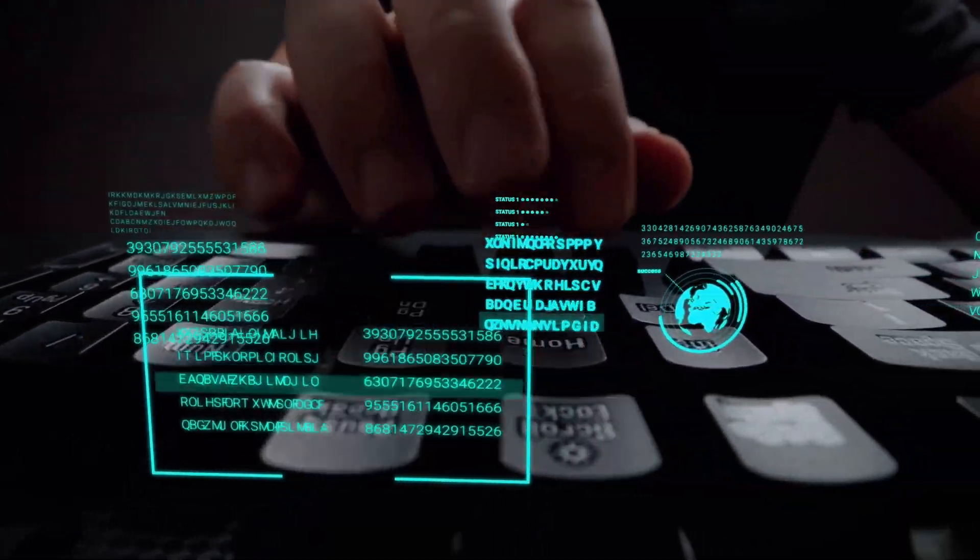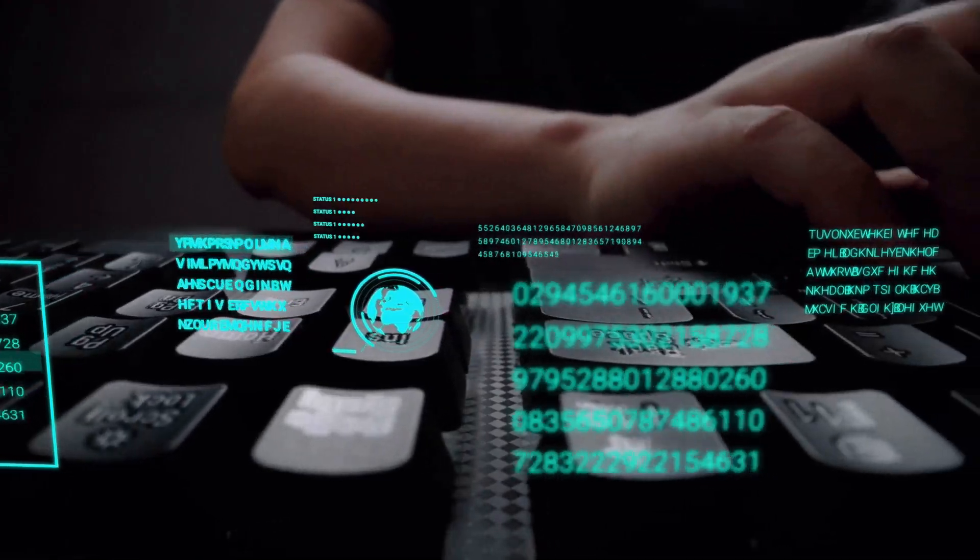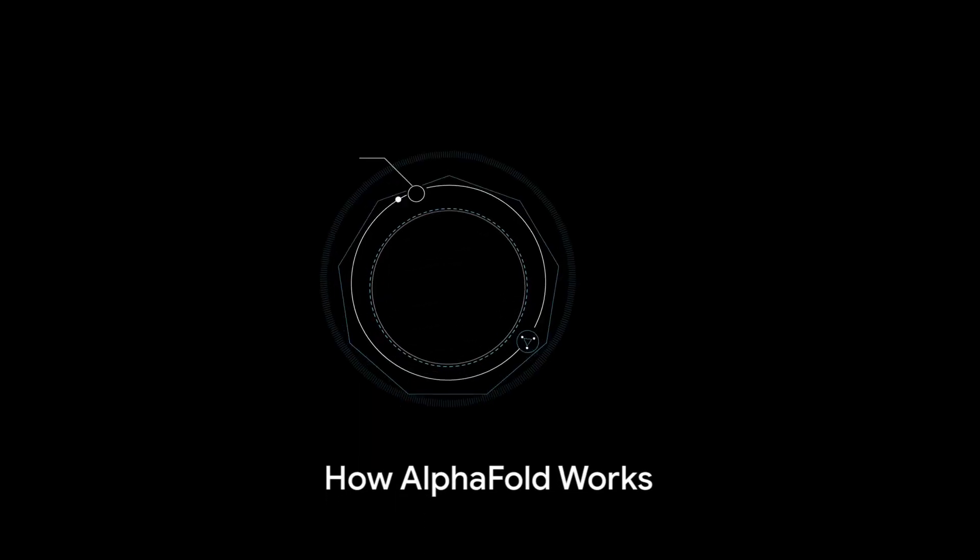AlphaFold is like a master puzzle solver with a knack for predicting the 3D structure of proteins. So how does this AI whiz work?